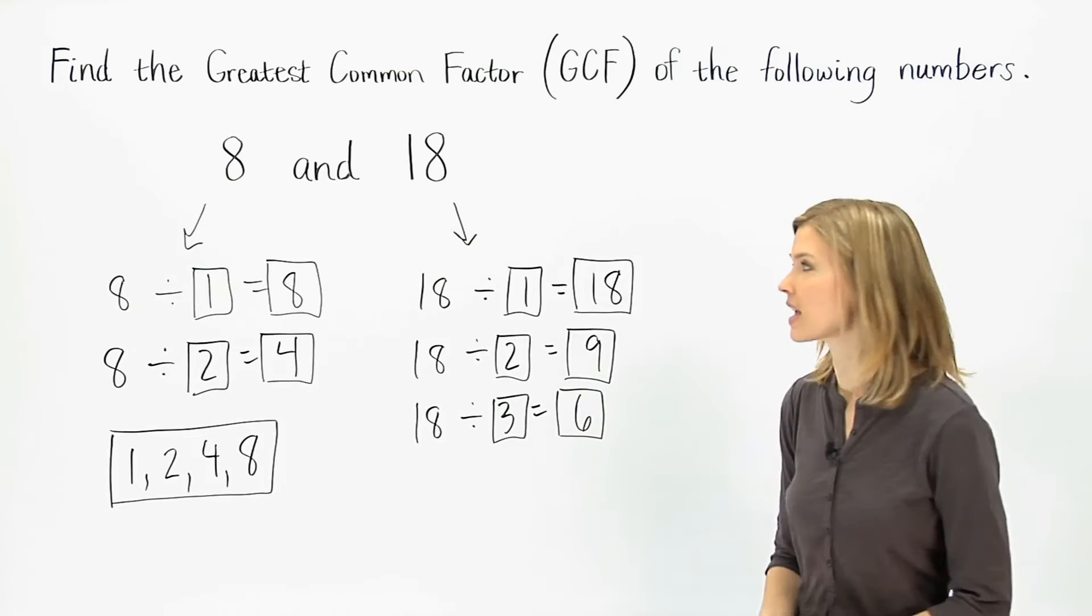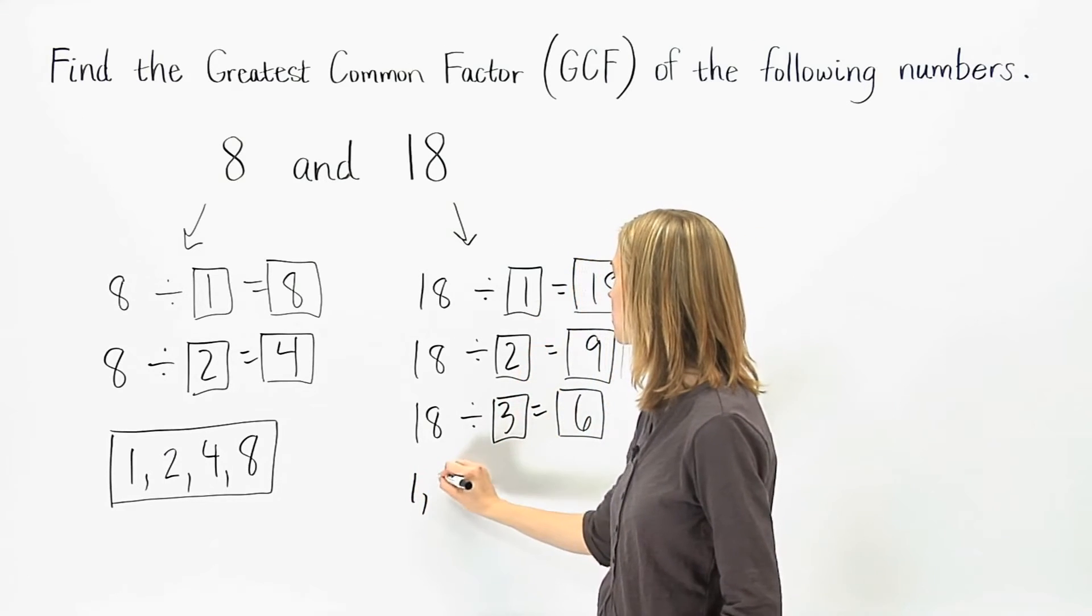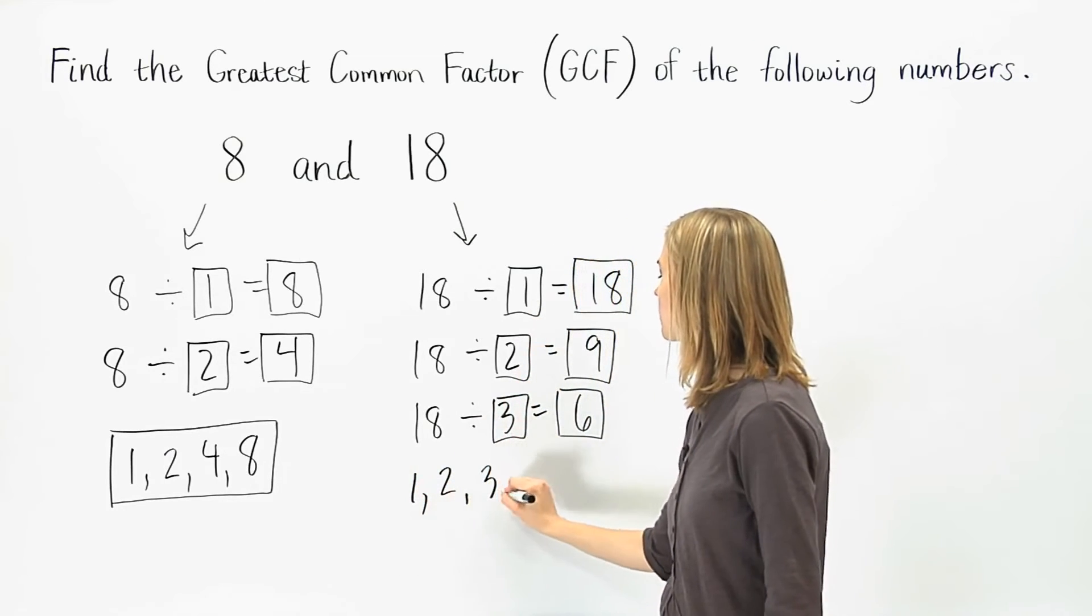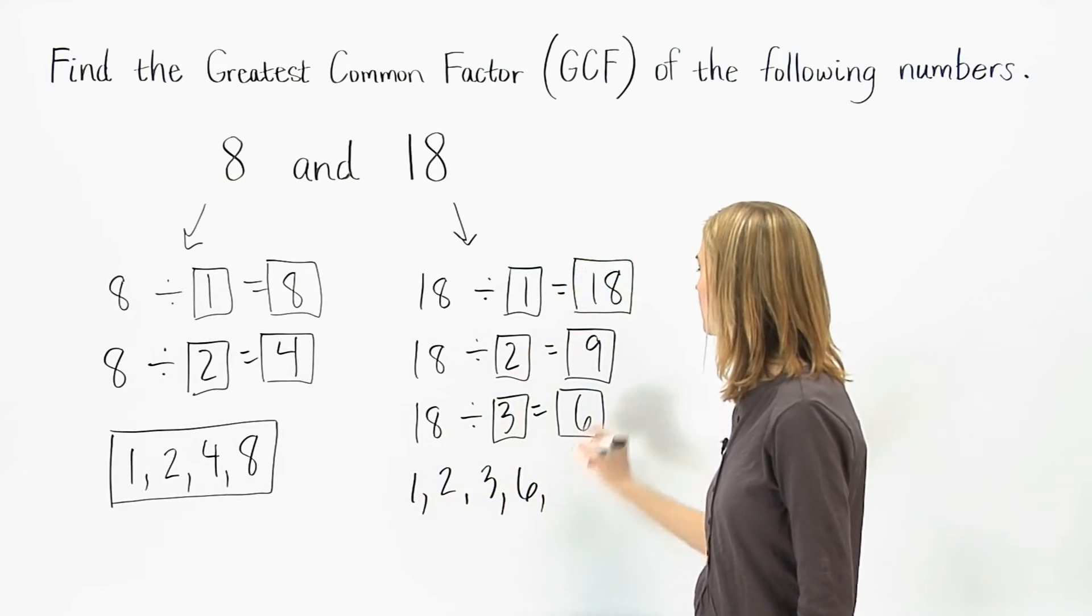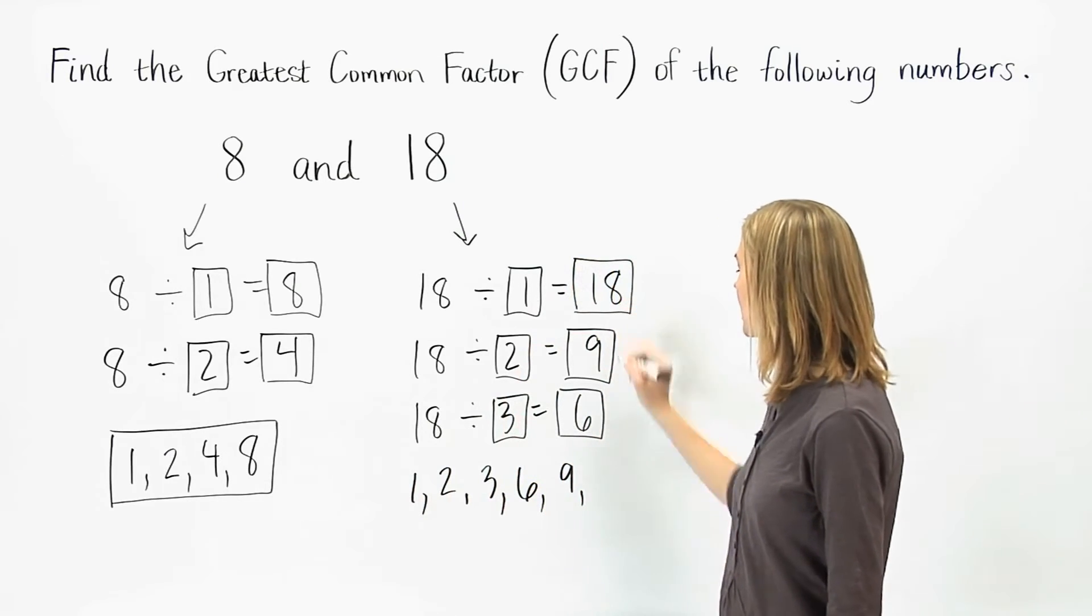So the factors of 18 are 1, 2, 3, 6, 9, and 18.